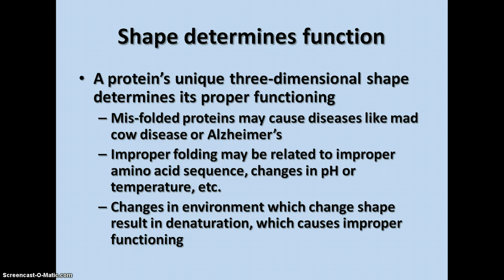The unique three-dimensional shape determines how the protein functions. If proteins are misfolded, it can cause diseases like mad cow disease or Alzheimer's disease. There are a number of reasons why folding might be improper — it could be a mistake in making the protein, a change in the amino acid sequence, or a change in pH or temperature. Other changes in the environment can also change the shape, resulting in denaturation, which causes improper functioning of the protein.